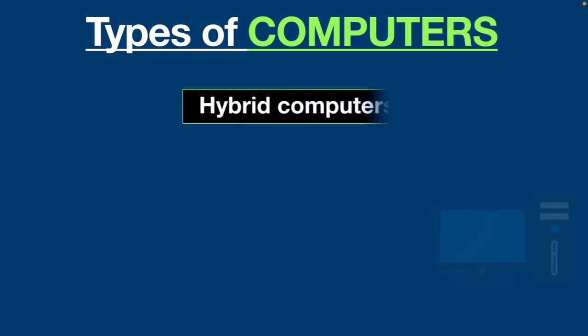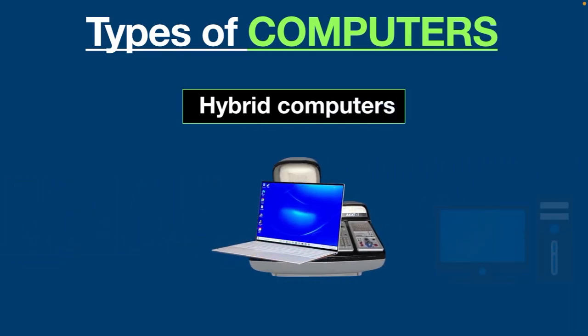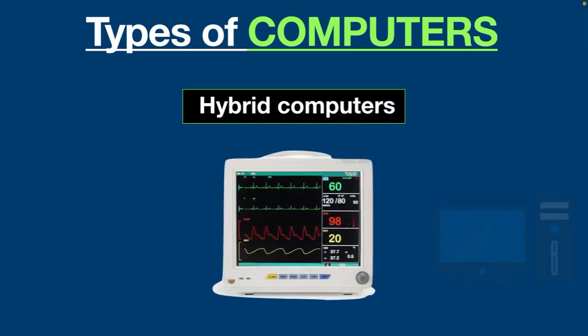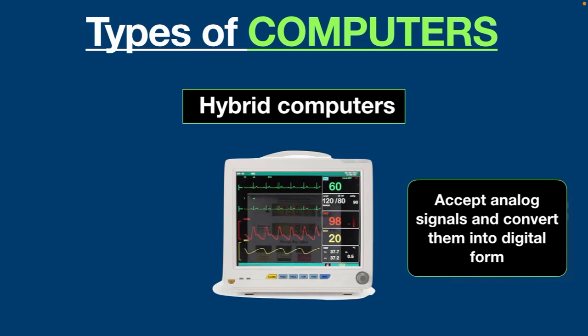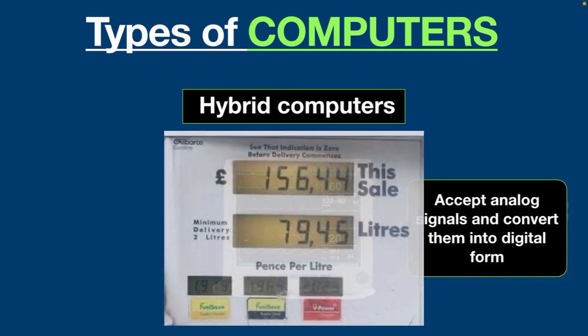Hybrid computers are a combination of both analog and digital computers. They are fast like analog computers and have memory and accuracy like digital computers, so they have the ability to process both continuous and discrete data. They work by accepting analog signals as input and converting them into digital form before processing.